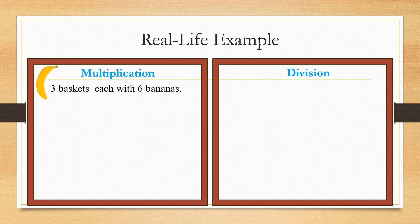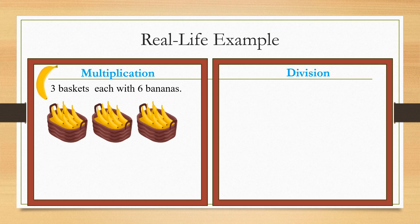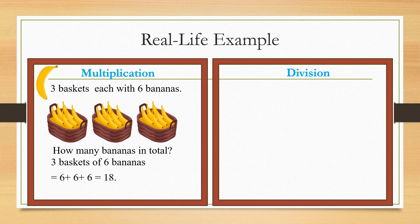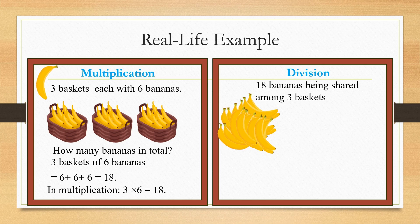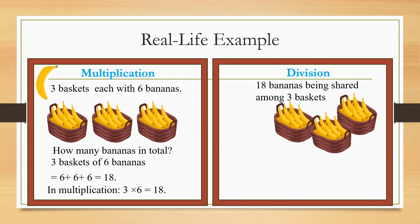Three baskets, each with six bananas. How many bananas are there in total? Six plus six plus six equals 18, and it is the same as writing three times six equals 18.